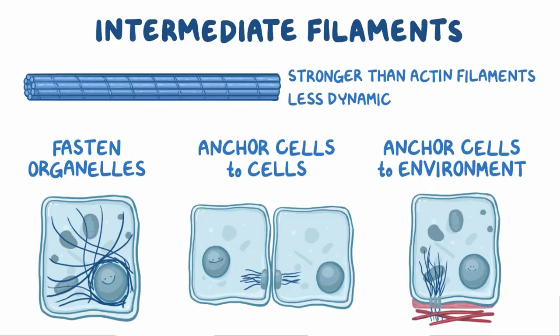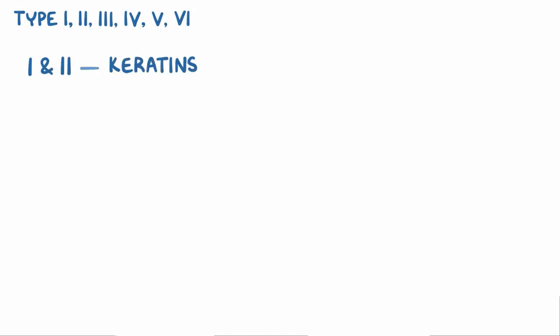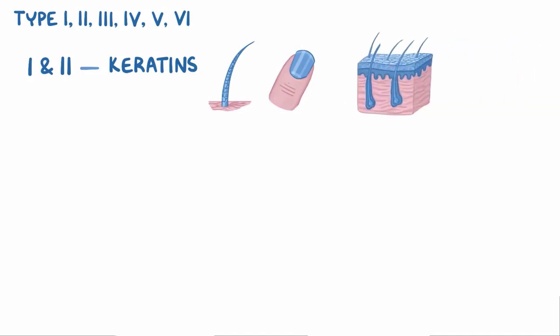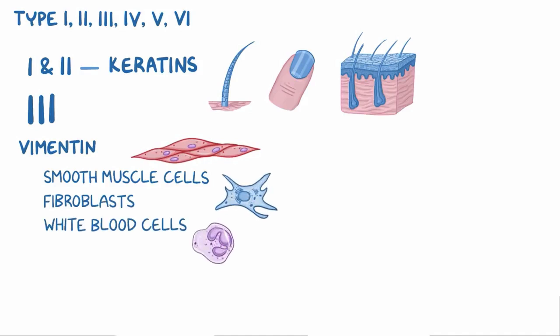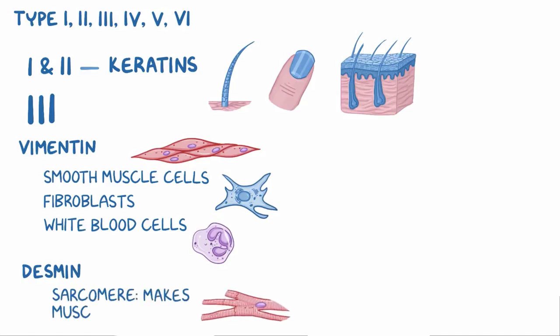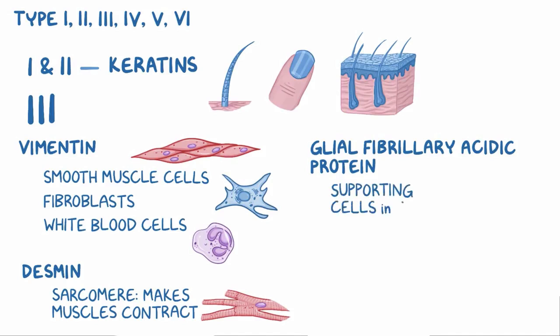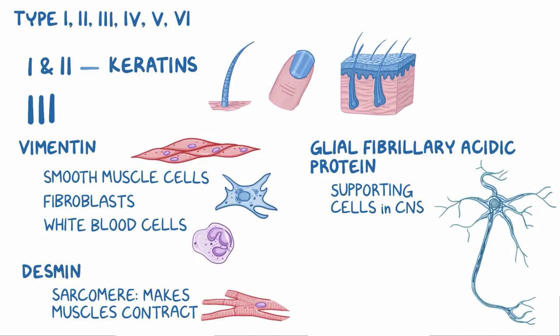Unlike actin filaments and microtubules, intermediate filaments are made of many types of proteins depending on the cell type. They are classified by their molecular similarities into types 1 through 6. Types 1 and 2 are the keratins, which make up the main structural component of hair, nails, and the outermost layer of the skin. Type 3 includes the most common of all intermediate filaments, vimentin, found in smooth muscle cells, fibroblasts, and white blood cells. Another type 3 protein is desmin, which forms the basic unit of skeletal and cardiac muscle cells — the sarcomere. A third type 3 protein is glial fibrillary acidic protein, found in supporting cells of the central nervous system like astrocytes. A fourth type 3 protein is peripherin, found in neurons of the peripheral nervous system.